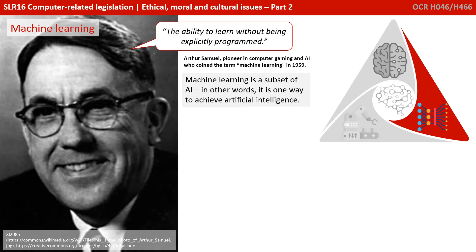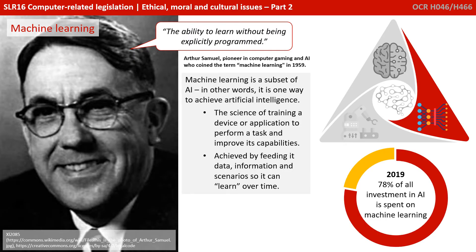So what do we mean by machine learning? This is a term coined by Arthur Samuel in 1959. He describes it as the ability to learn without being explicitly programmed. Machine learning is a subset of AI — in other words, it's one way to achieve artificial intelligence. It is the science of training a device or application to perform a task and then improve its own capabilities, generally achieved by feeding it data, information and scenarios so it can learn and evolve over time.